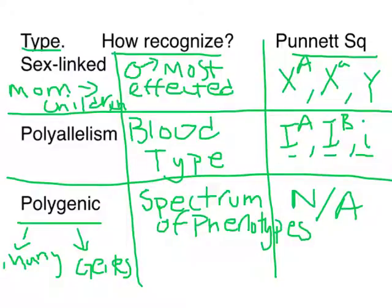With polygenic traits, you don't have two or three or even five phenotypes — you have many phenotypes, and the difference between one phenotype and the next is really, really slight. These also tend to occur along a bell curve, which we'll talk about on the next slide.